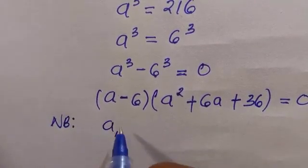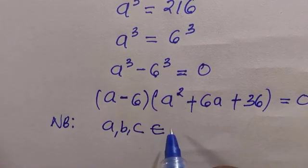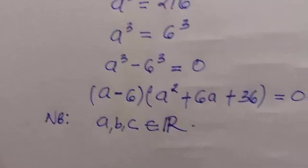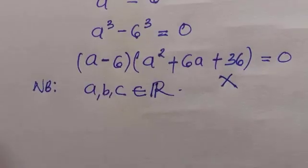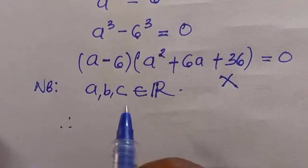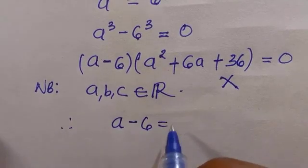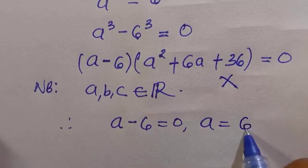But we should note that a, b, c and the equations, all of them are members of real numbers. So therefore we're going to neglect a² plus 6a plus 36 because it's complex. Then we have a minus 6 equals 0, therefore a equals 6.